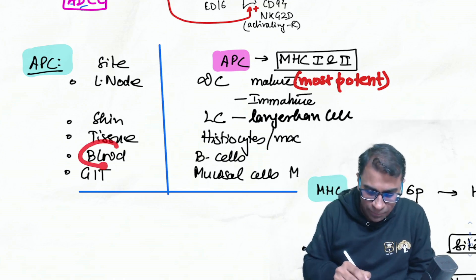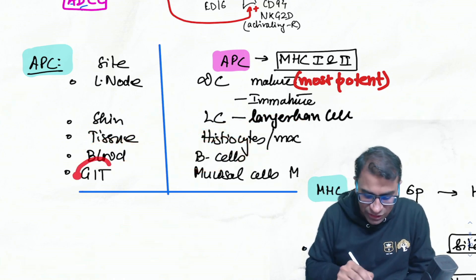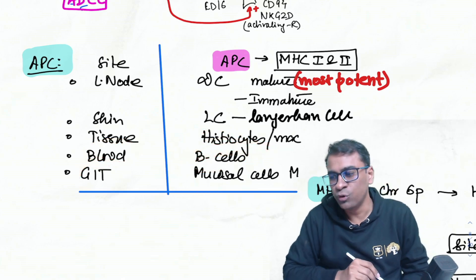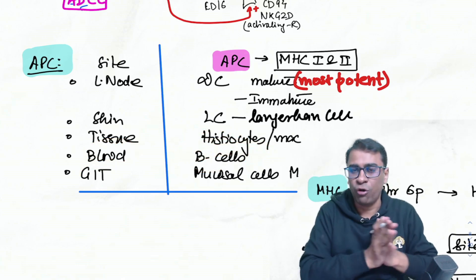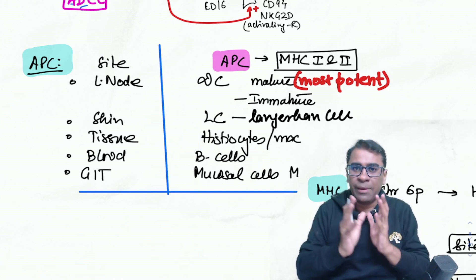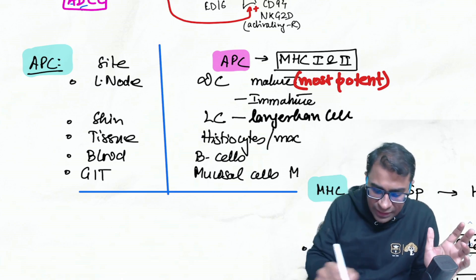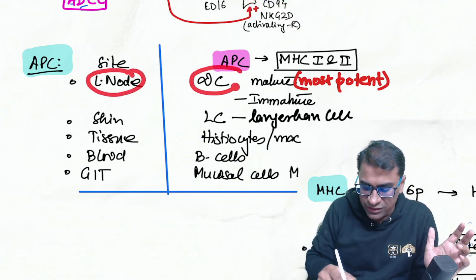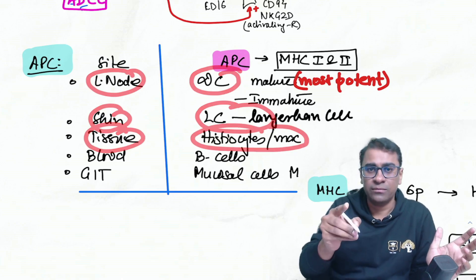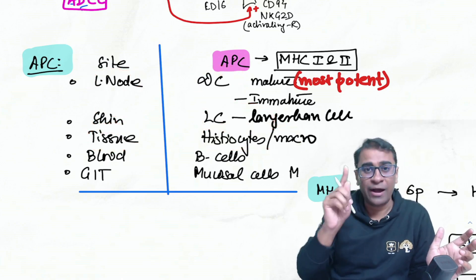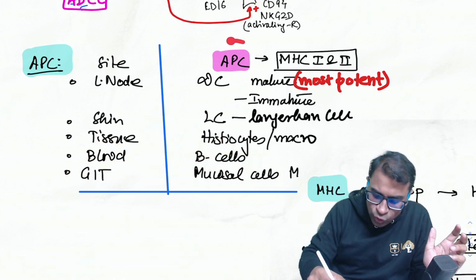In tissue, APCs are histiocytes and macrophages — macrophage is the 'Bahubali' of pathology. In the blood, APCs are B cells. In the GIT mucosa, APCs are mucosal or M cells. What makes APCs special is their expression of MHC-1 and MHC-2.